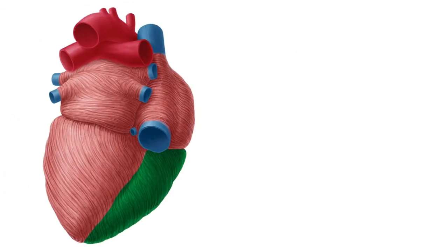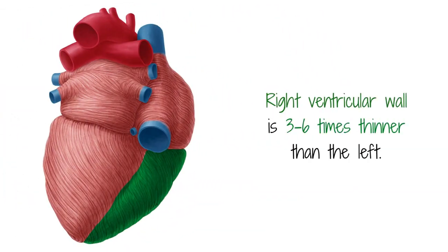The right ventricular wall is three to six times thinner than the left because it starts off thicker and reduces in mass towards the apex. Despite this difference in muscle mass, the inner chambers of the ventricles are the same size and can contain approximately 85 milliliters of blood in adults.